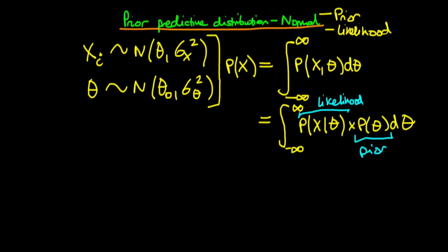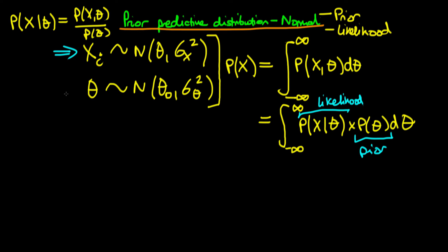Just to be absolutely clear, we got this by the conditional probability formula, which states that the probability of x given theta is equal to the joint probability of x and theta divided by the probability of theta. So what we could do is substitute in our likelihood function, which is normal, and our prior distribution, which is also normal, into this second integral and do the integral — and that would give us our prior predictive distribution.